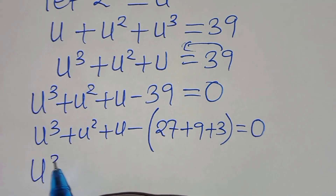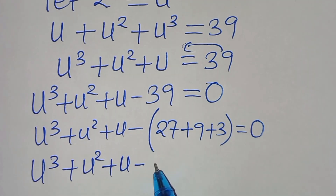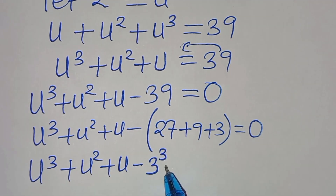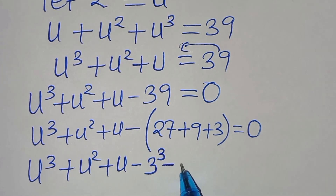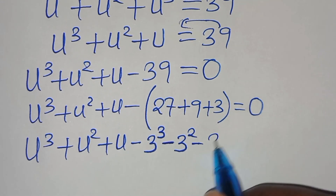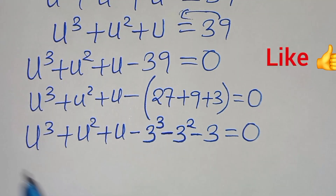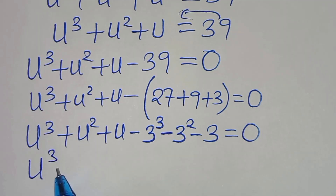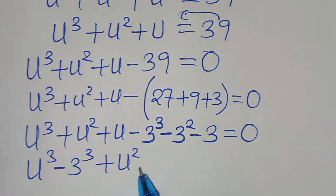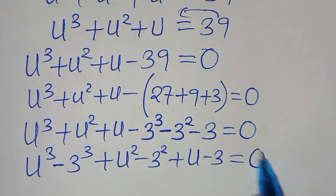So we have u to the power of 3 plus u to the power of 2, then plus u, subtract 27 — where 27 can be expressed as 3 to the power of 3 — minus 9, which we can express as minus 3 raised to the power of 2, then subtract 3, this is equal to 0. We can rewrite this as u³ minus 3³, then plus u² minus 3², then plus u minus 3, this is equal to 0.